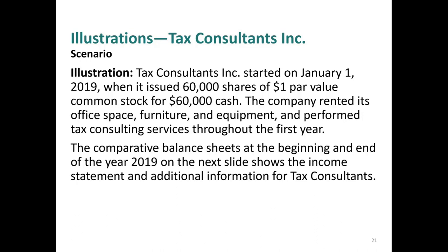Let's take a look at an example to see how this all fits together. We're looking at a tax consulting company that started January 2019. It issued 60,000 shares of $1 par value common stock for $60,000 — the investors invested $60,000. The company rented its office space, furniture, and equipment, and performed tax consulting services throughout the year.